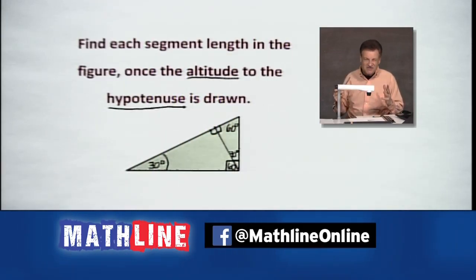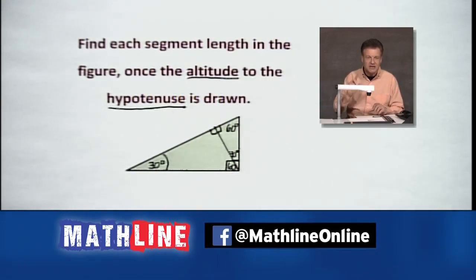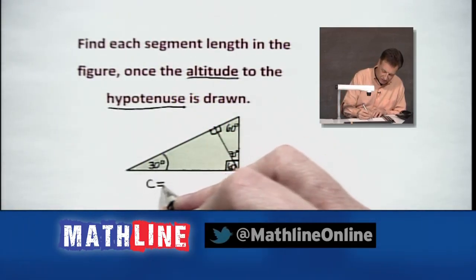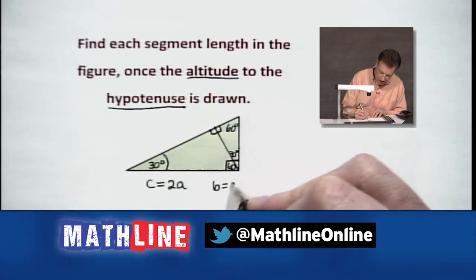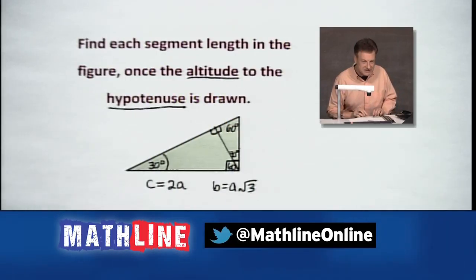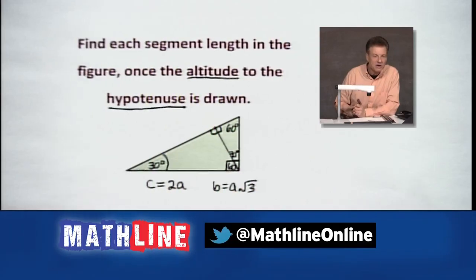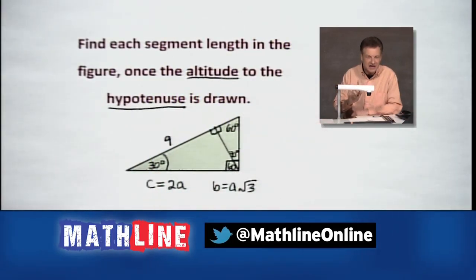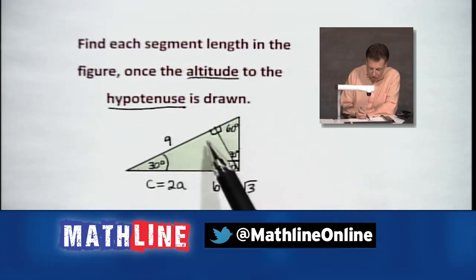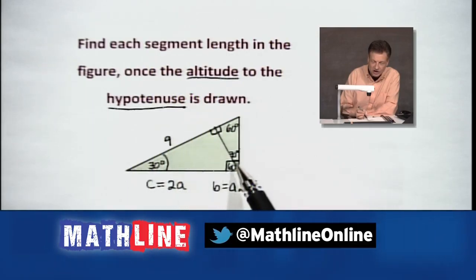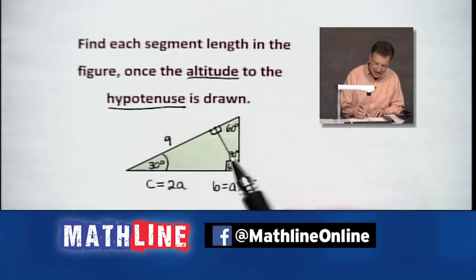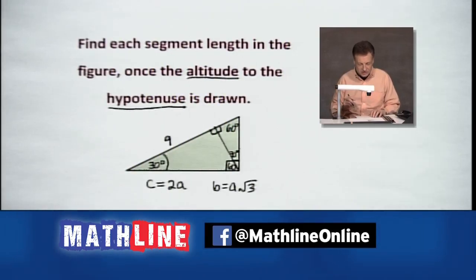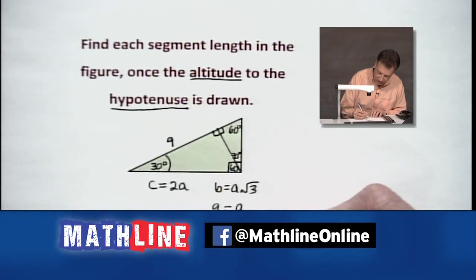There are three 30-60-90 degree triangles in this problem — three special triangles. They all have the same shape; they are just different sizes based on the legs and the hypotenuse. They're still going to be in this special relationship: C equals 2A, or B equals A times the square root of 3. That's our 30-60-90. We need to know something — I'm going to put a 9 right there. We have no choice but to start with the little left-sided triangle. It's the B side of the 30-60-90 — opposite the 60. So we have to say 9 equals A times the square root of 3.